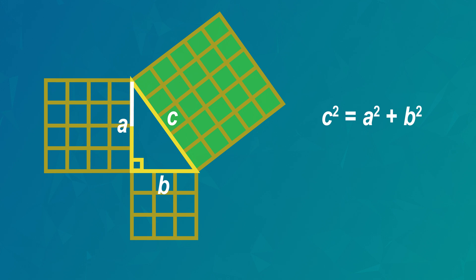We use this rule to calculate the lengths of all three sides of any right angle triangle. Now let's see an example.